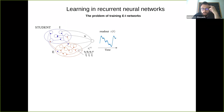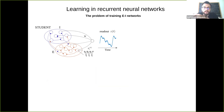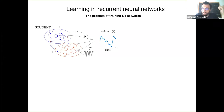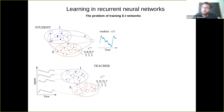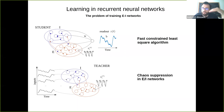What happens when we respect Dale's law — a biological constraint of the brain — which states that neurons are divided into excitatory and inhibitory populations? We need a student divided into two populations: excitatory and inhibitory. The teacher is similarly divided, and receives the same readout as input. This opens up many additional challenges: it's not easy to generalize recursive least squares to constrained synapses, and handling E/I balance networks in the balanced regime is complicated.